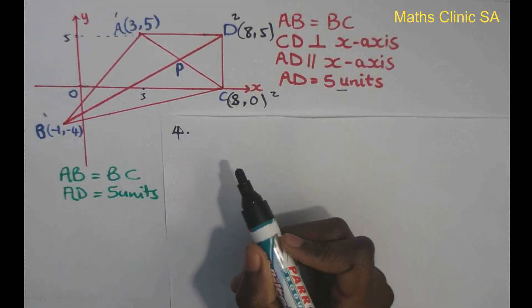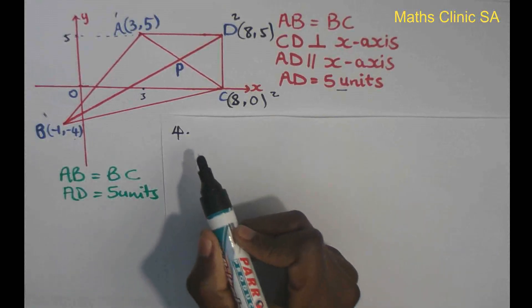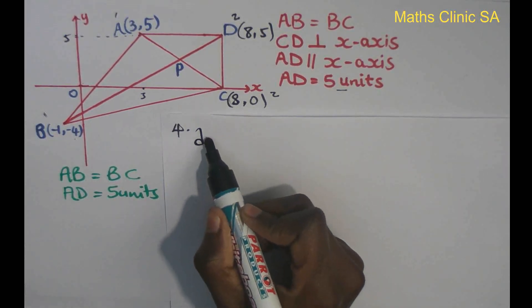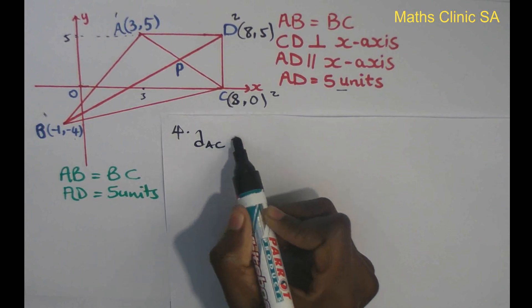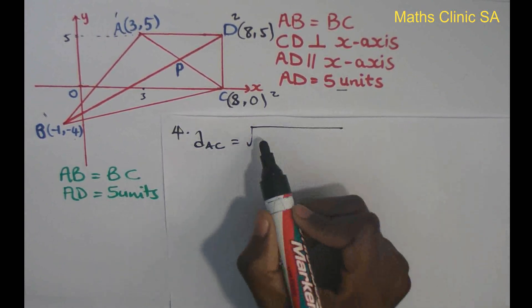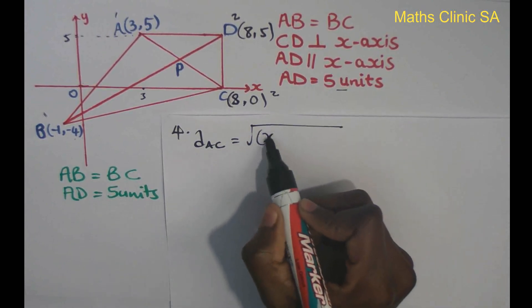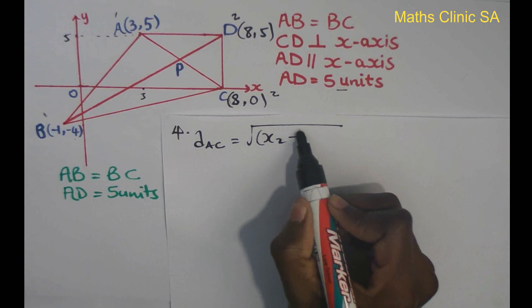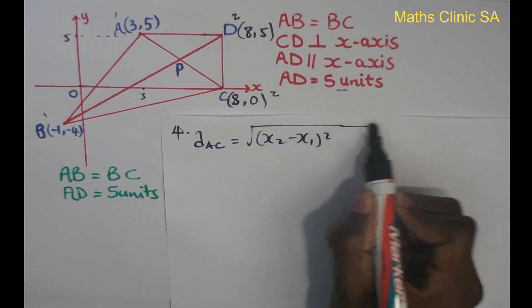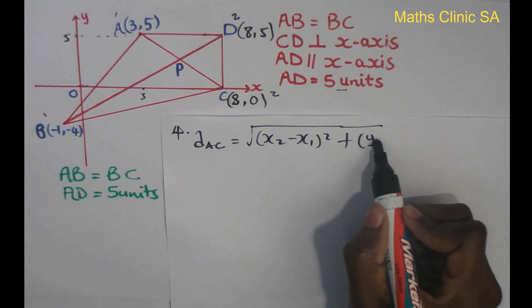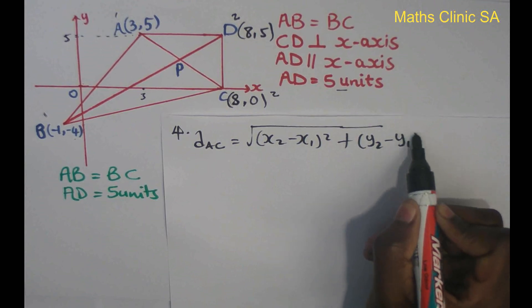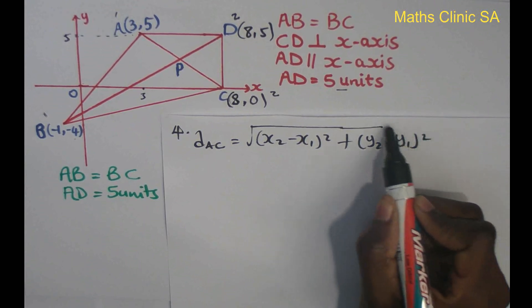I am going to write the distance formula. The distance formula is: the square root of (x2 minus x1) squared plus (y2 minus y1) squared.